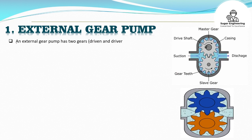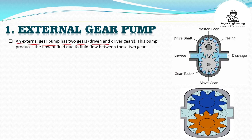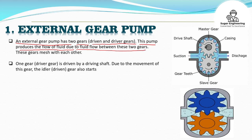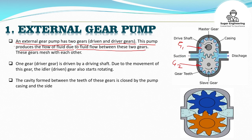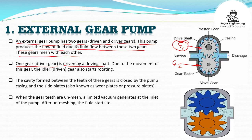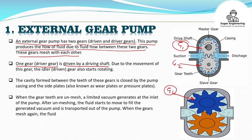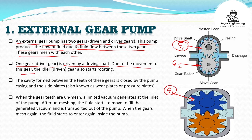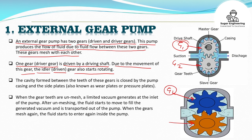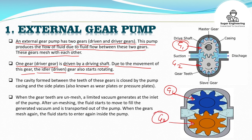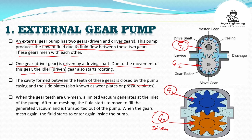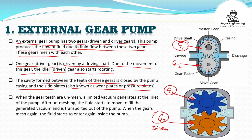Number 1: external gear pumps. An external gear pump has two gears — the driven and the driver gear. This pump produces the flow of fluid due to fluid flow between these two gears. This is gear 1 and this is gear 2. These gears mesh with each other. Gear 1, the driver gear, is driven via the driving shaft. Due to the movement of this gear, the idler or driven gear also starts rotating. The cavity formed between the teeth of these gears is closed by the pump casing and the side plates, also known as wear plates or pressure plates.